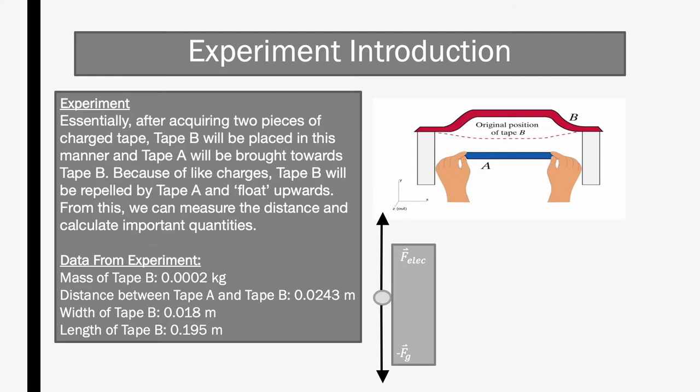The experiment for lab 2 is similar to the experiment from lab 1. Essentially, after acquiring two pieces of charged tape, tape B will be placed in this manner and tape A will be brought towards tape B. Because of like charges, tape B will be repelled by tape A and float upwards.